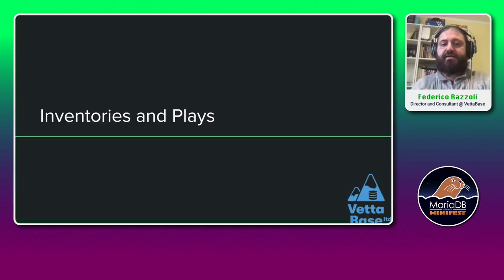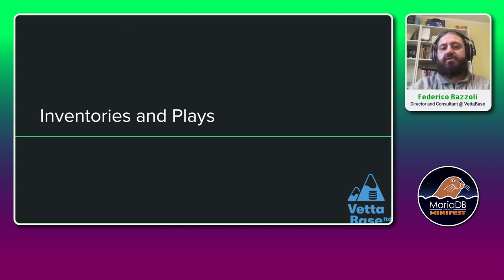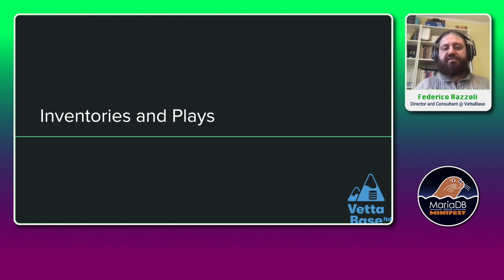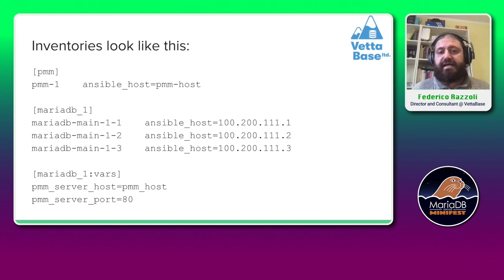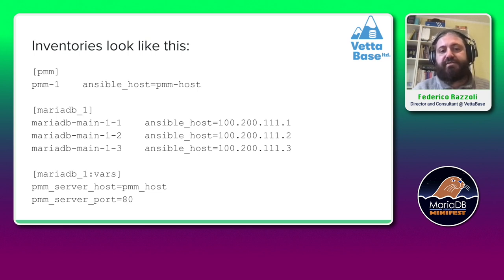So let's start. The first thing we want to look at is inventories. Inventories are the files that say which servers we are going to manage using Ansible. You can also use dynamic inventories in Ansible but we will not look into that. We will have only two inventories called production and staging. They are almost the same — they define two groups: one for PMM, which is the monitoring solution we're using, and a group for the MariaDB nodes, which are part of a three-node Galera cluster.